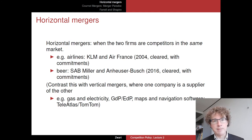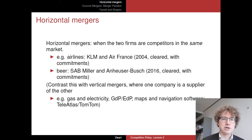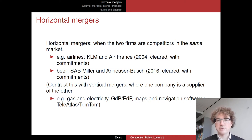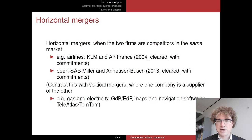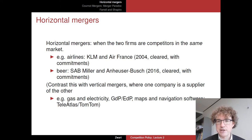We are focused on horizontal mergers. A horizontal merger occurs when two firms are direct competitors in the same market, competing with different brands for the same consumers. An example is the merger between KLM and Air France in 2004, which was cleared with commitments — they had to sell off or give away some landing slots at certain airports to open those up for competition.